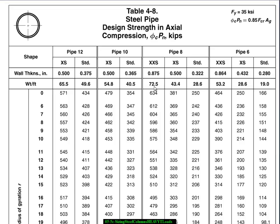But it weighs 72.5 whereas the extra strong 12 inch pipe only weighs 65.5. So our column of choice in the case of steel pipe is going to be the pipe 12 extra strong.